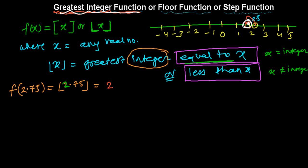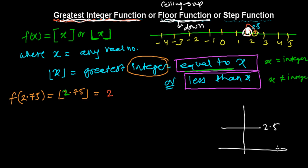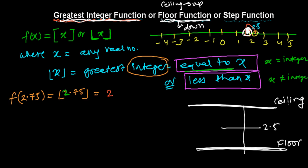That's why it's called the greatest integer function. Now, understanding it as a floor function: 2.5 on a number line — the floor below it is 2, and the ceiling above it is 3. Floor means down, ceiling means up. We'll learn the ceiling function later after this.